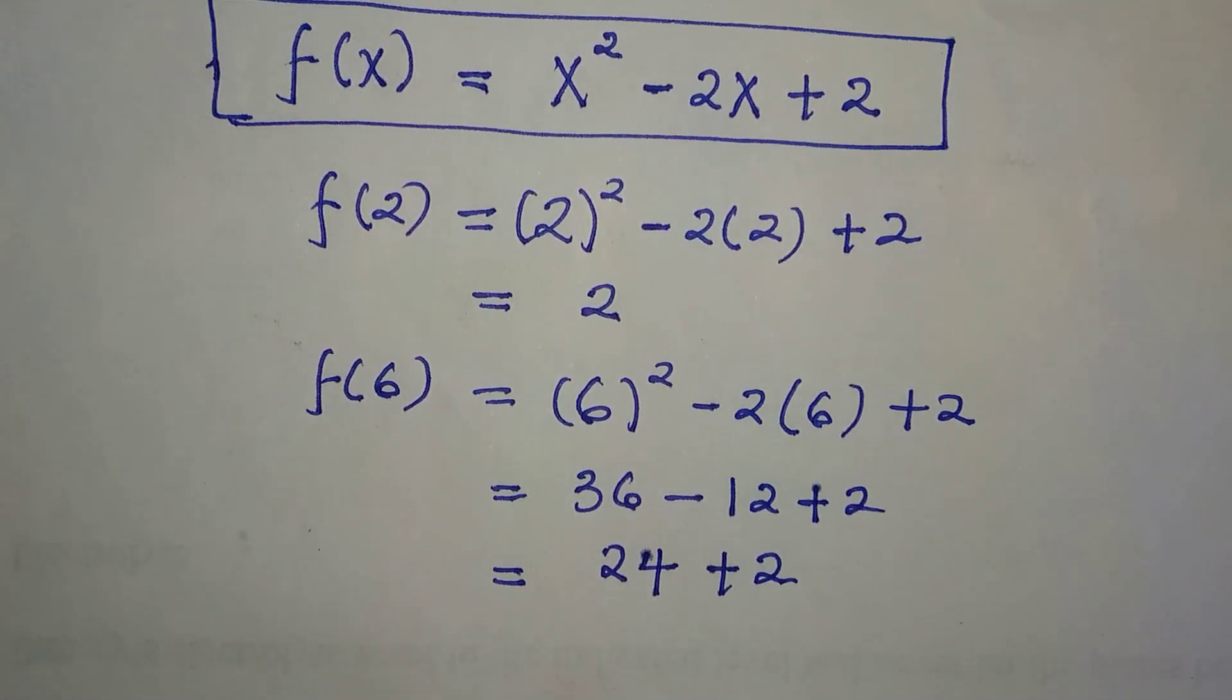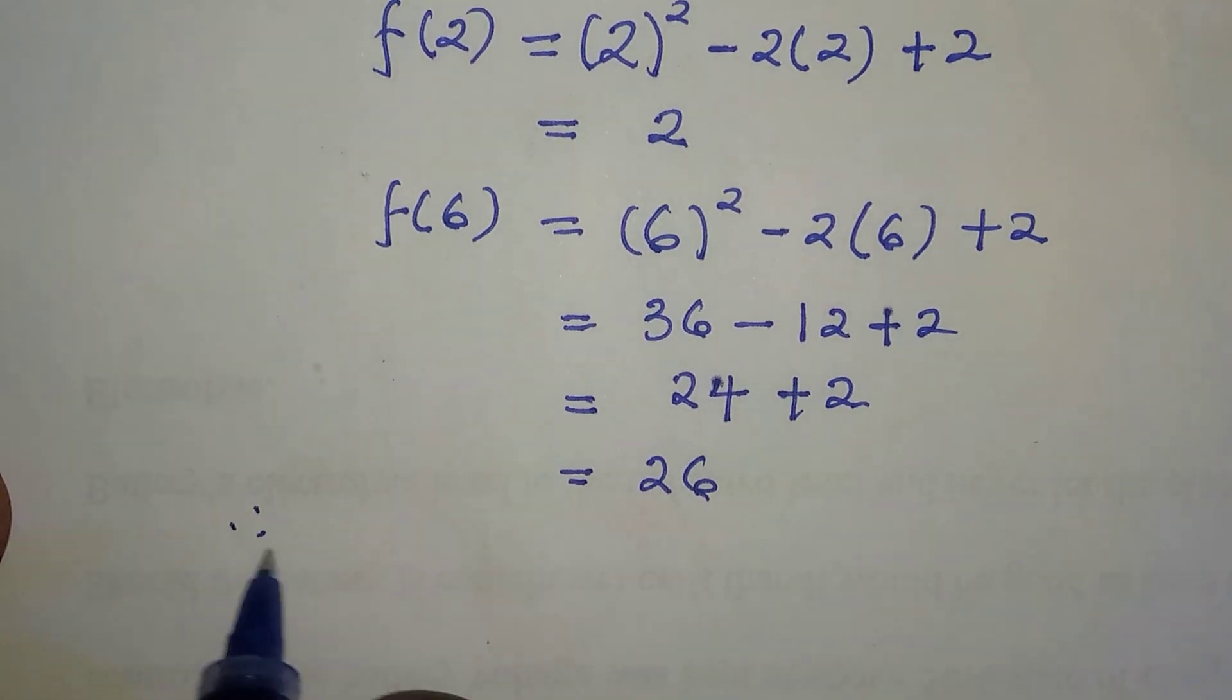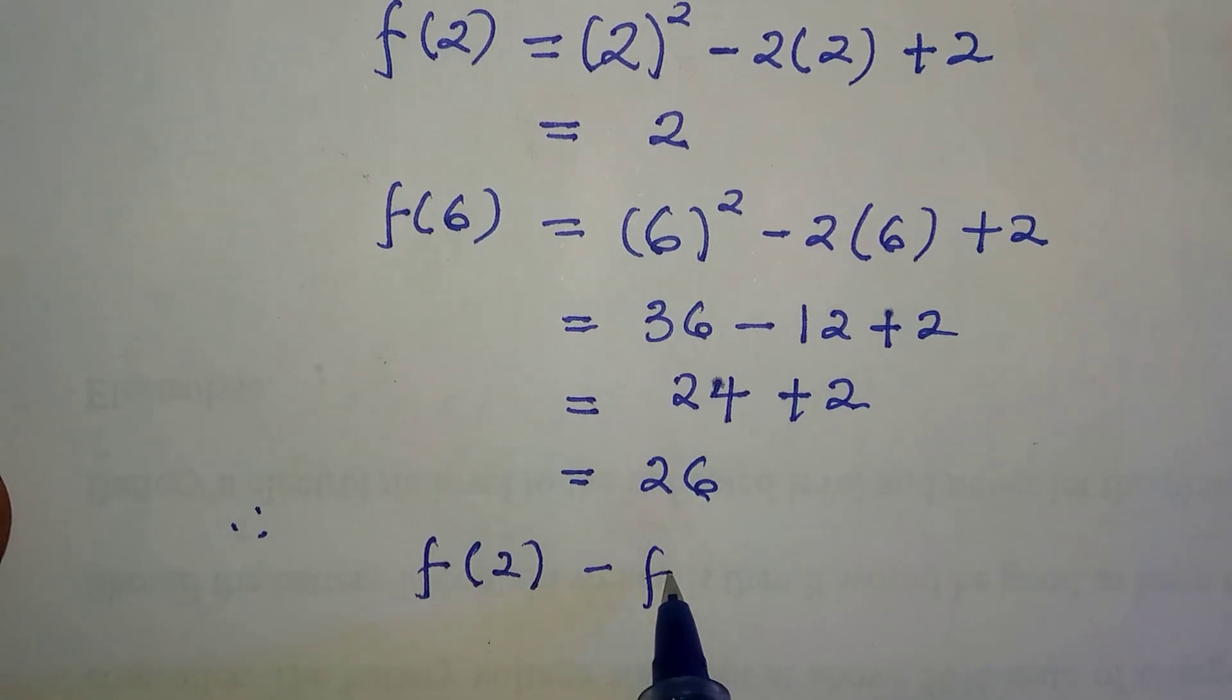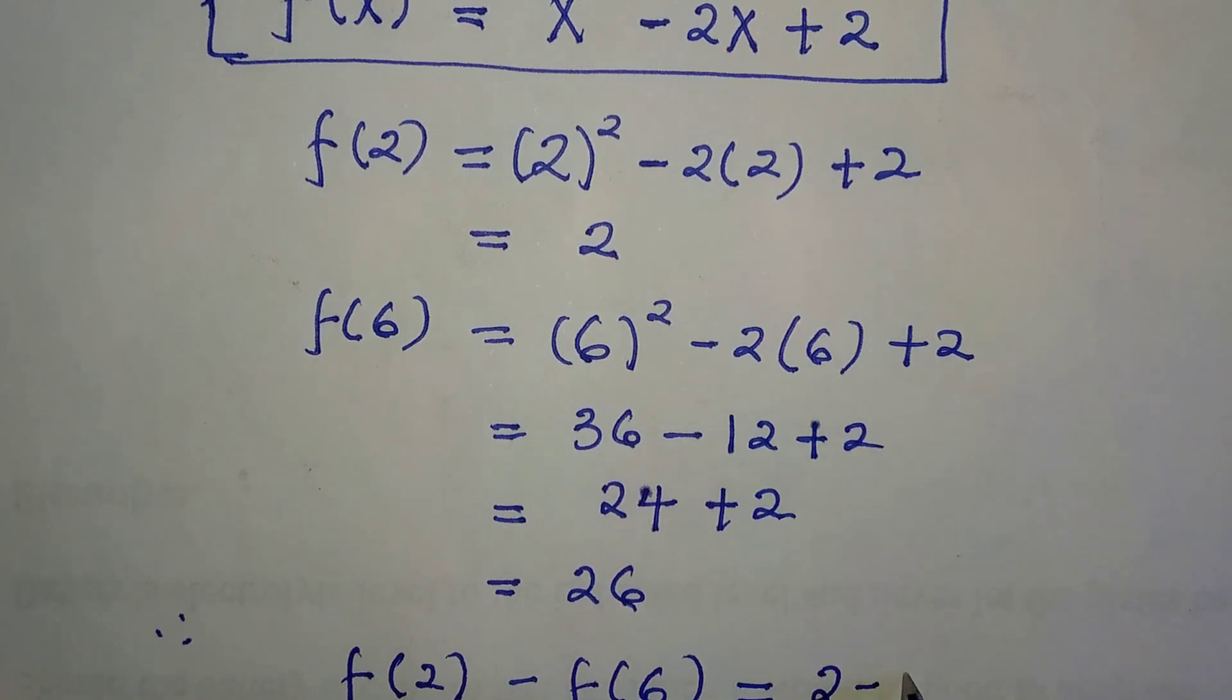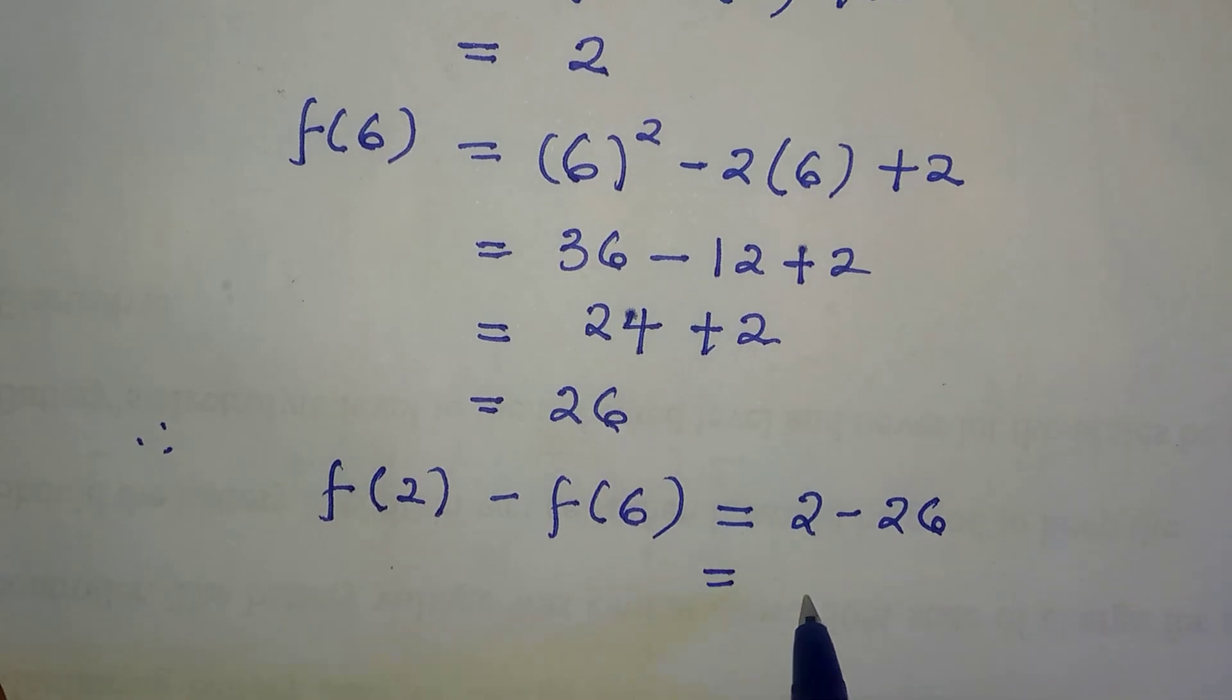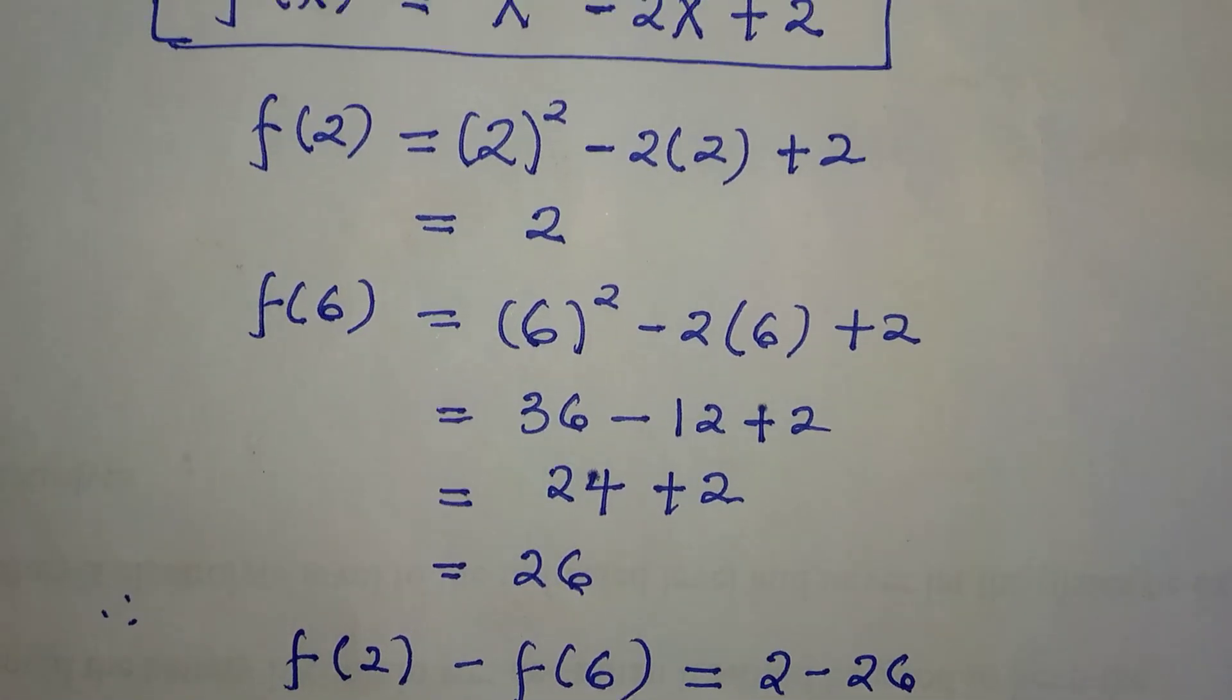We can now copy the two together as f(2) minus f(6) equals... where f(2) is 2 and f(6) is 26, and we are going to have minus 24. So here comes the solution of the given function above. Either polynomial functions or functional equations, they work nearly the same way.